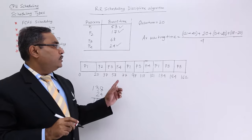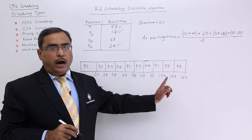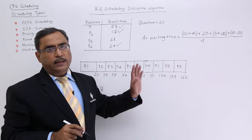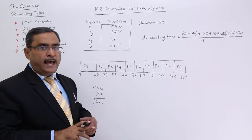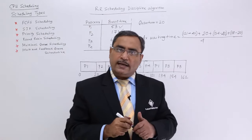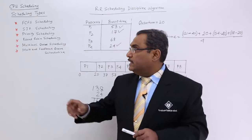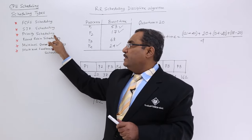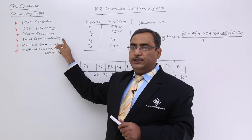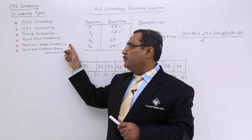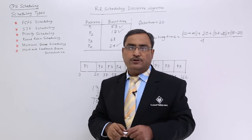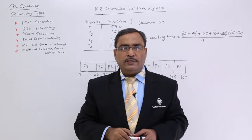So in this way, in case of round robin scheduling, how to calculate the average waiting time I have shown you here. Considering that all the processes have arrived at instant time, instant 0. So in this way, I have completed FCFS, SJF, priority scheduling, round robin scheduling. In the next video, we shall discuss multi-level queue scheduling and multi-level feedback queue scheduling. Thanks for watching this video.